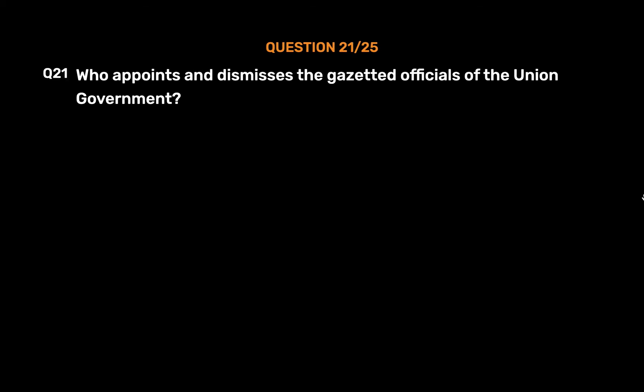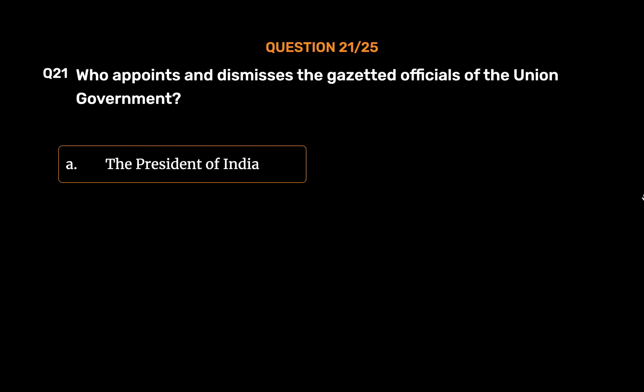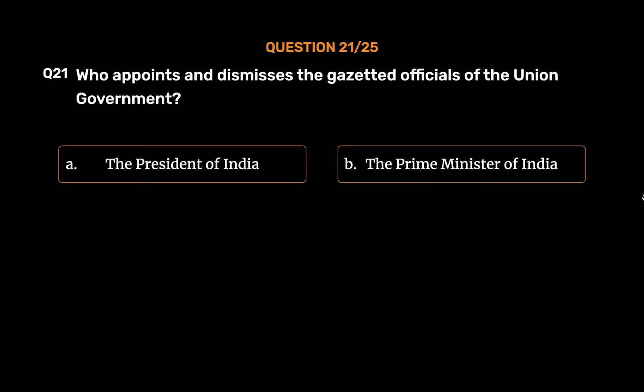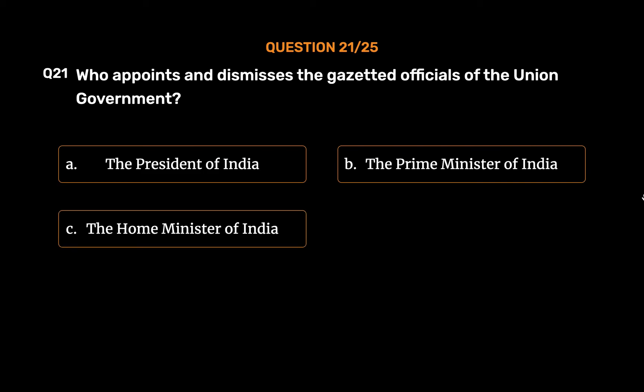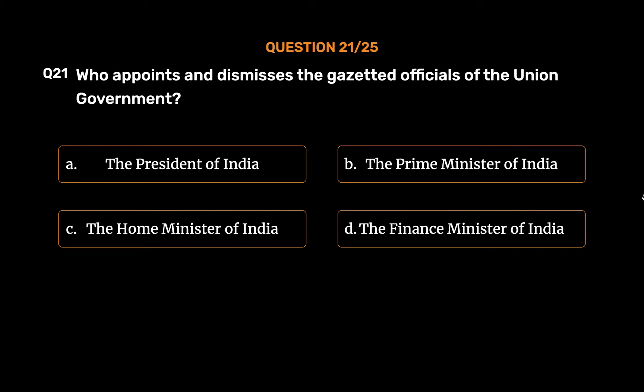Question No. 21. Who appoints and dismisses the gazetted officials of the union government? Option A: The President of India. Option B: The Prime Minister of India. Option C: The Home Minister of India. Option D: The Finance Minister of India.